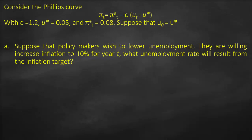Consider the Phillips curve: inflation equals expected inflation minus epsilon, because we have a negative relationship between unemployment and inflation, multiplied by unemployment minus the natural rate of unemployment (u star), where epsilon equals 1.2, u star equals 5%, and expected inflation at time t equals 8%. Suppose that u zero equals u star.